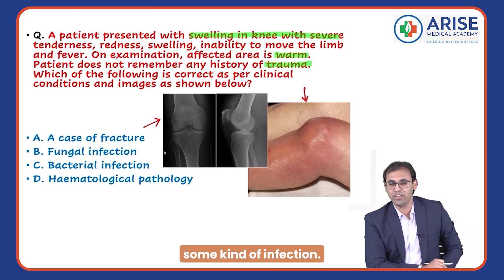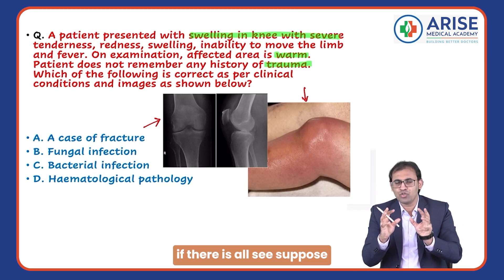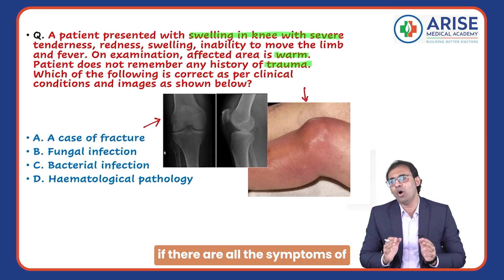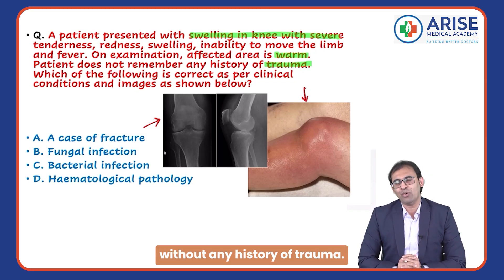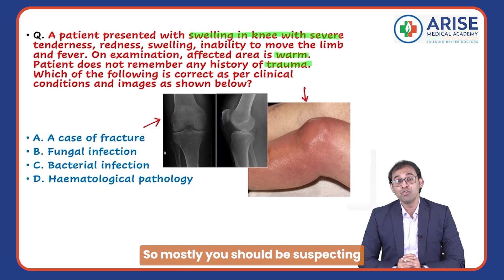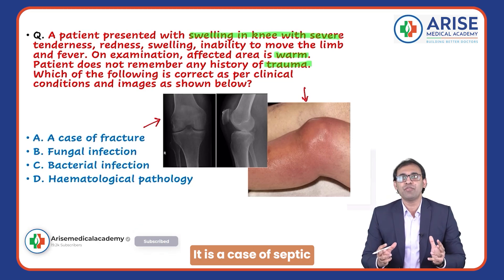So it means there is some kind of infection. If you see all the symptoms of a bone fracture without any history of trauma — swelling, warmth, and shiny skin — you should mostly be suspecting some kind of infection near the joint. This is a case of septic arthritis.